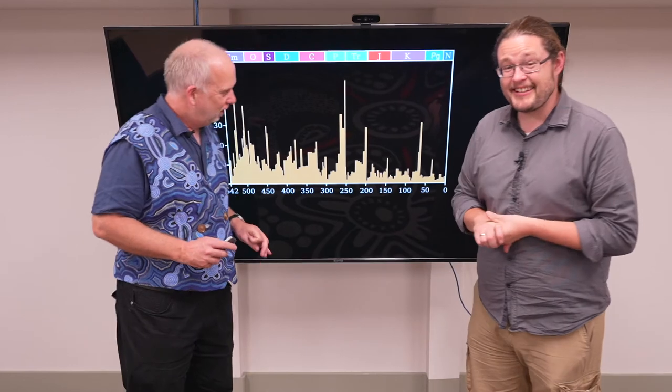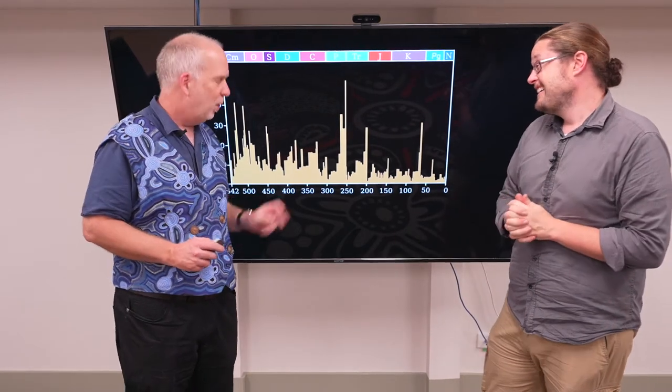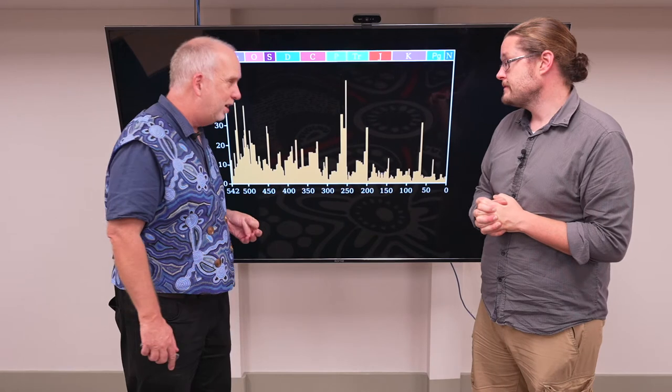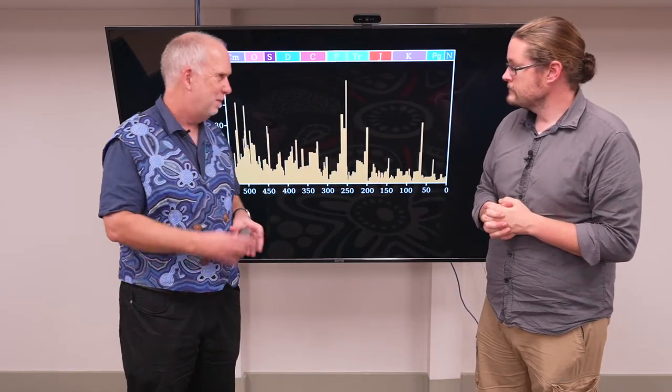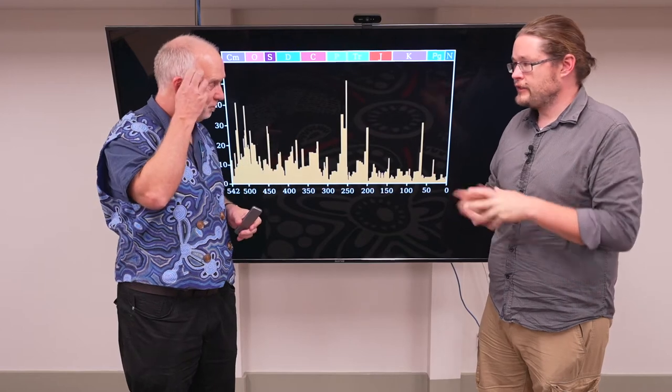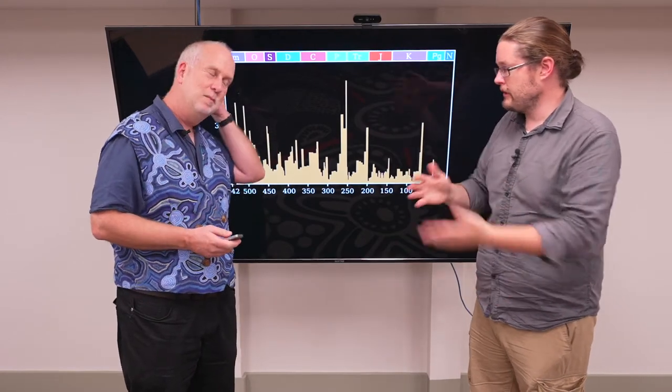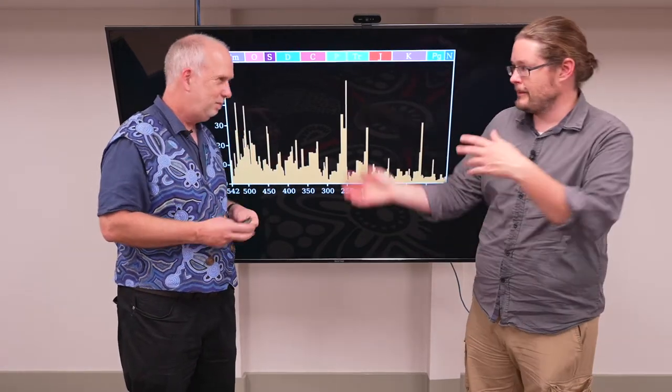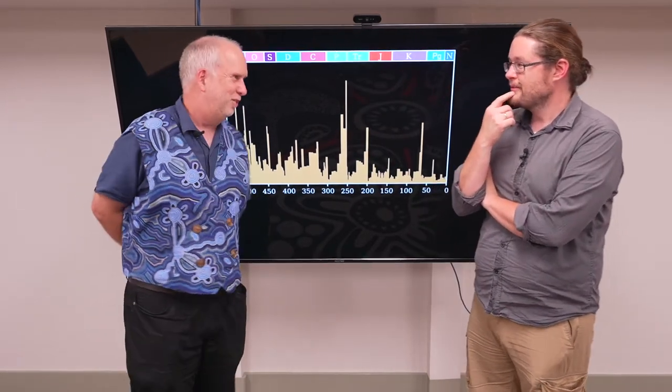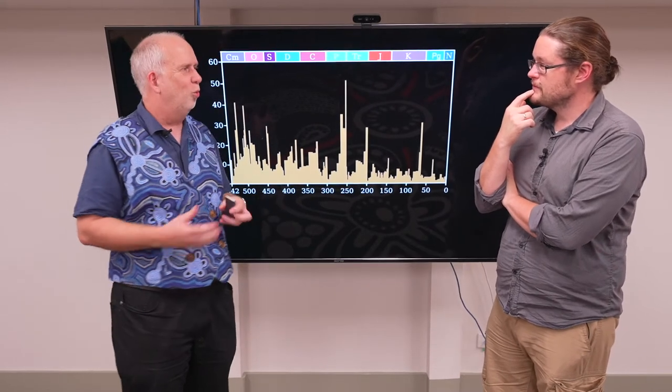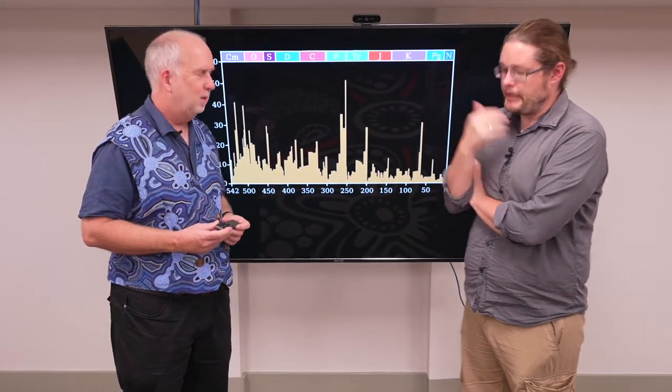But one claim is there might be a 20 million year or 60 million year periodicity. And you can try and fit the few big extinctions up and maybe try and force them to fit this. So the idea is that every 20 or 60 million years there's a comet that comes in. So the other question is, if there is a periodicity here, and I'm not at all convinced there is, then what could cause these sorts of things to happen on a regular frequency?